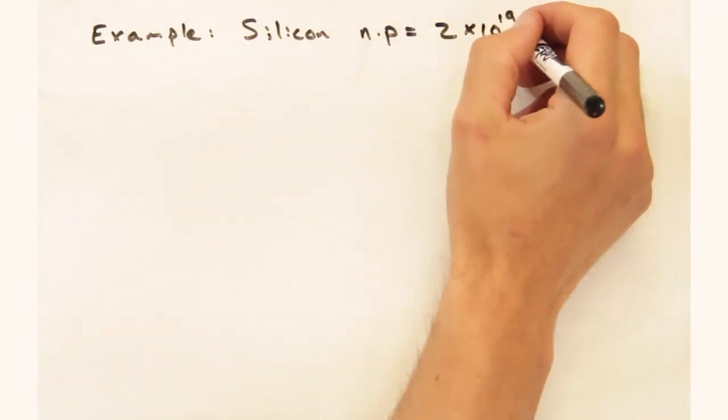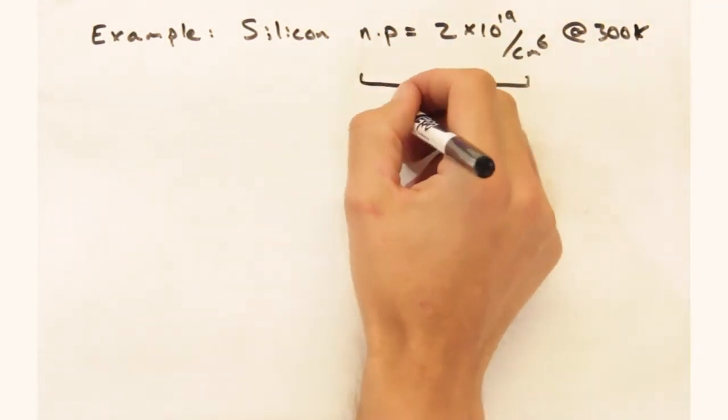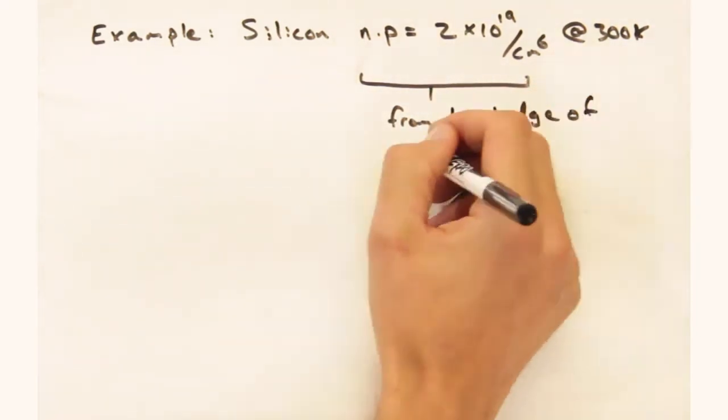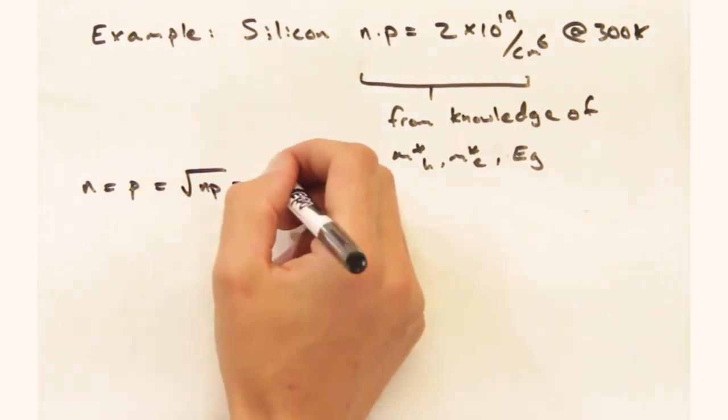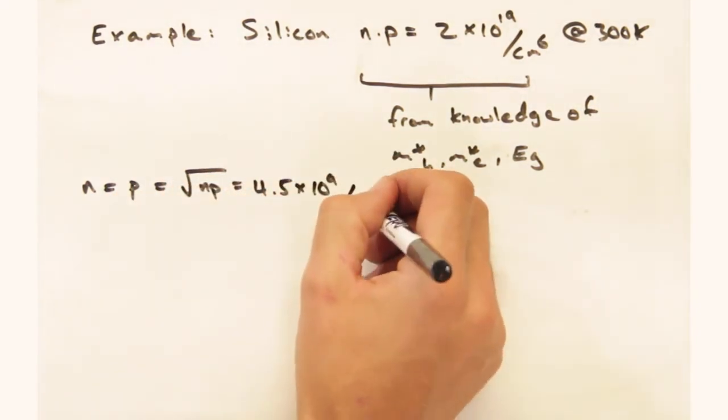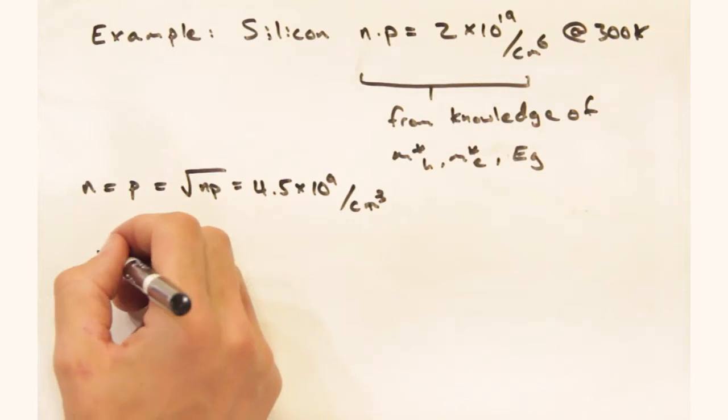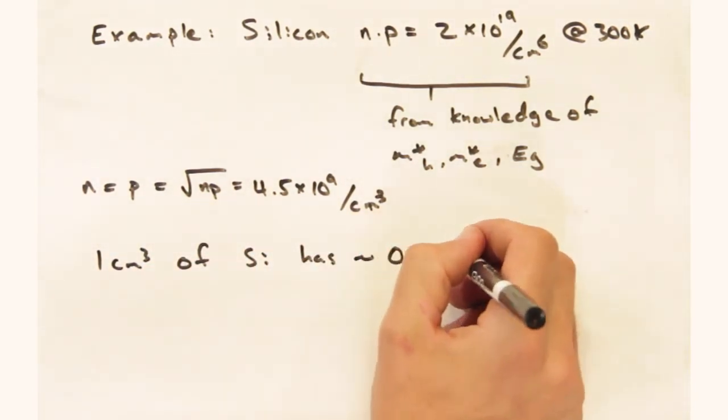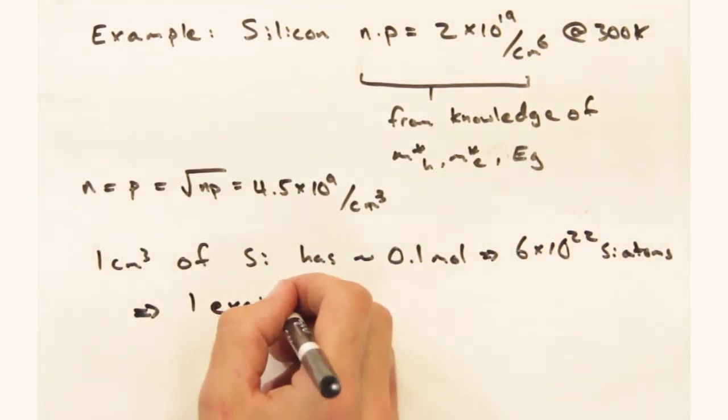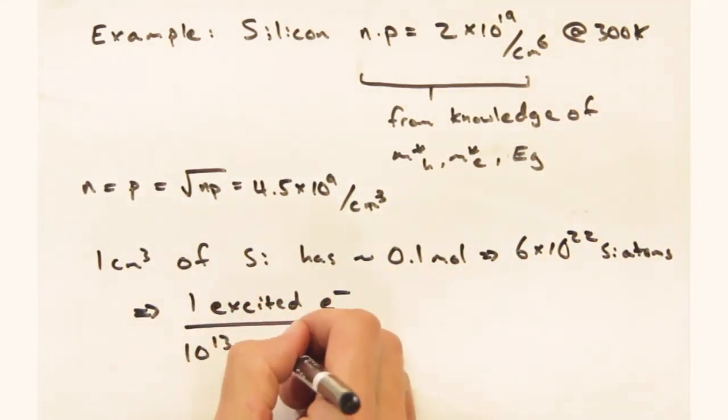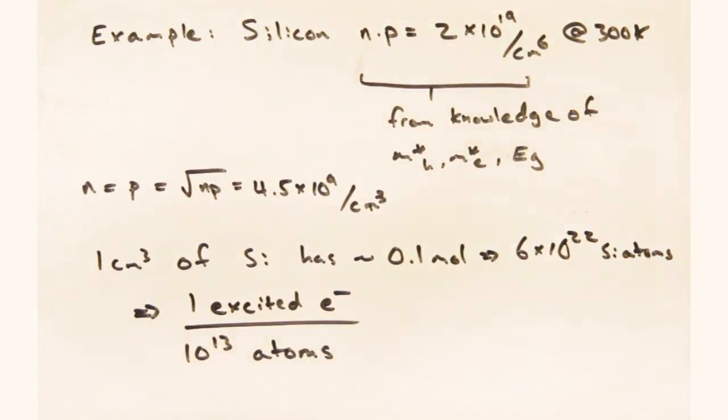For silicon at room temperature, it's 2 times 10 to the 19 carriers per centimeter to the sixth power. So in an intrinsic semiconductor, we have an electron and hole concentration populations of 4 times 10 to the 9 carriers per centimeter cubed. Not a lot of free carriers, given that a cubic centimeter of silicon holds about 0.1 moles of silicon atoms, or about 6 times 10 to the 22 atoms. So one excited electron for every 10 trillion atoms. That's a pretty tiny number.